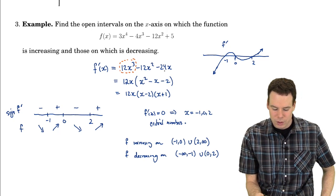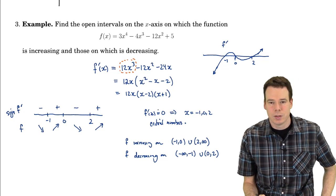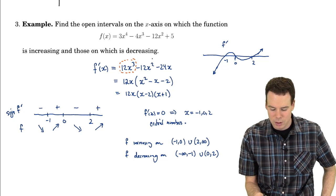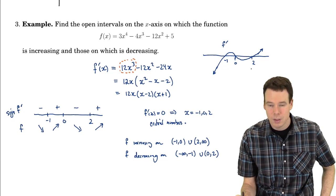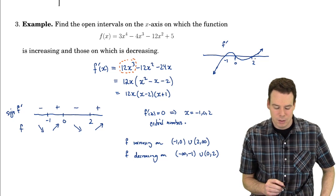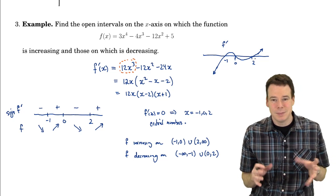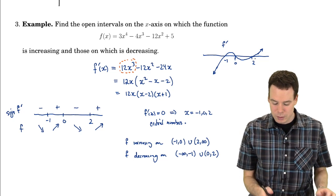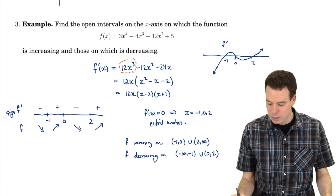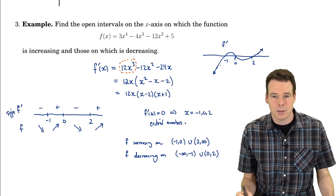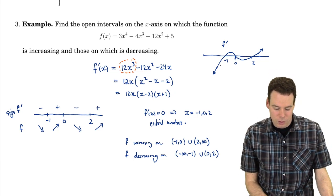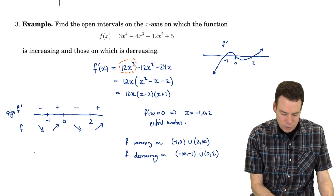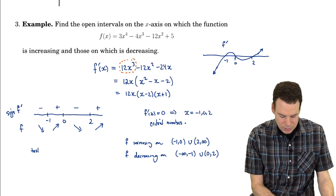I took a quick method to come up with the sign chart — using the fact that I knew what a cubic function roughly looks like, sketched a graph, and pulled off the signs. But in some situations we might not be able to quickly discern the sketch of the derivative. In those cases, you can just pick test points from each of the intervals.